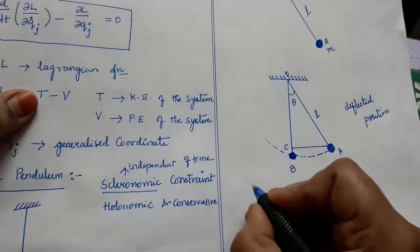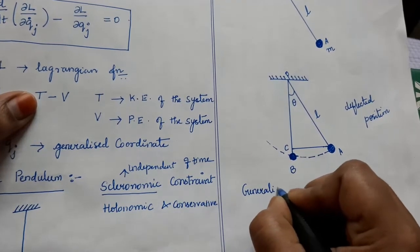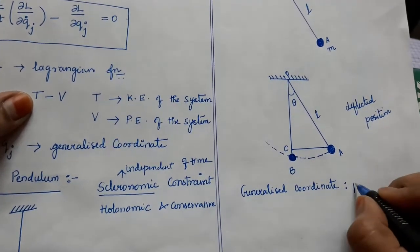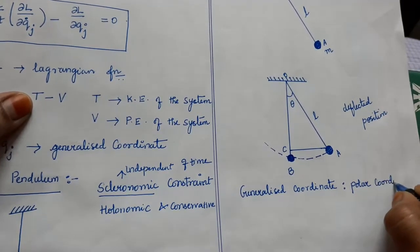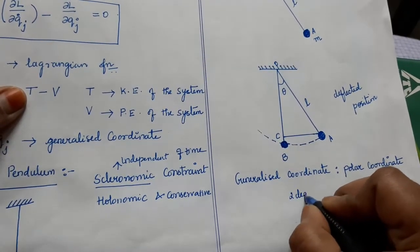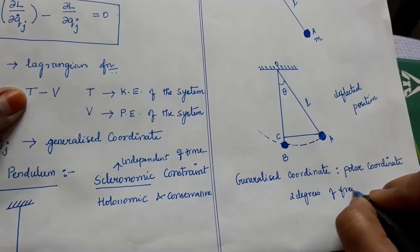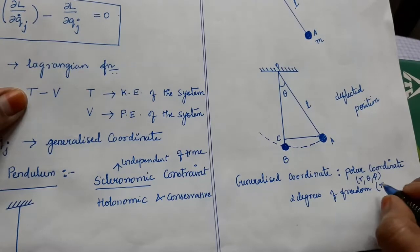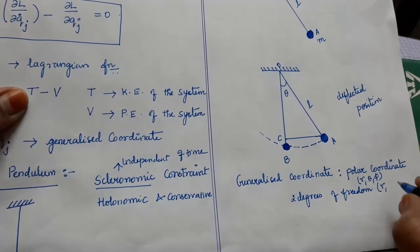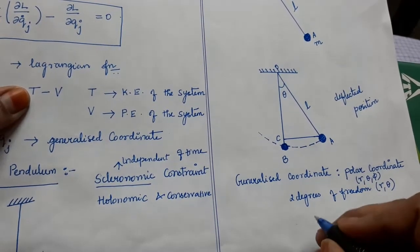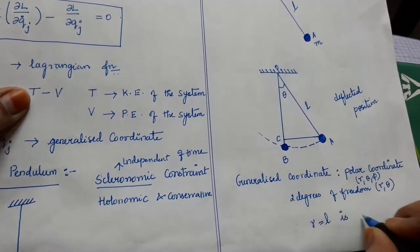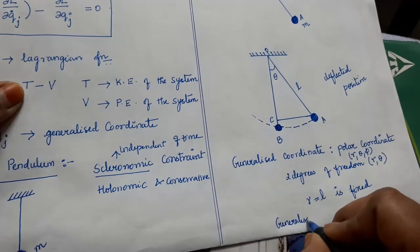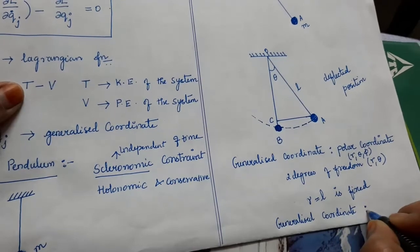First, we have to choose the suitable generalized coordinate for this problem. Looking at the geometry of the problem, the suitable generalized coordinate system is polar coordinates. It has only two degrees of freedom. The polar coordinate system is represented by R, theta, phi. Since it is moving only in a plane, we can leave phi. And since the length of the pendulum R = L is fixed, we can neglect R also. So the generalized coordinate on which the problem depends is theta.